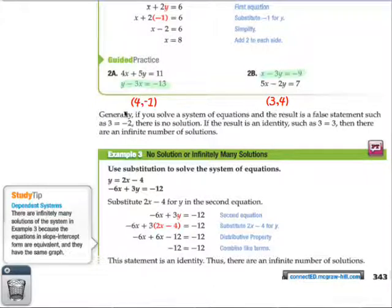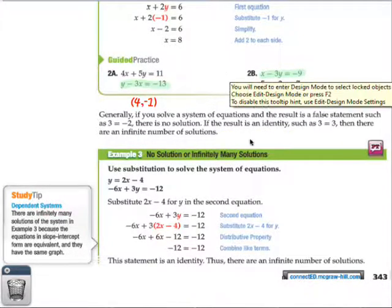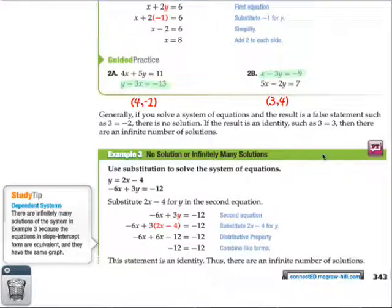You should have gotten (4, -1) and (3, 4). If you didn't, try them again, and if you still don't get it, make a note so we can go over them in class. Similar to things we've done lately, we have the opportunity to have no solution or infinitely many solutions problems.